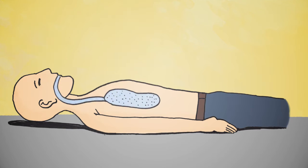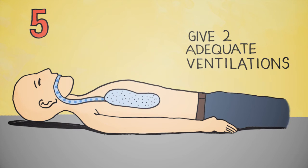Give 30 compressions and then 2 breaths. Avoid excessive ventilations. Each breath should last only until the chest rises. Breaths should be given gently, 6 to 8 breaths per minute.